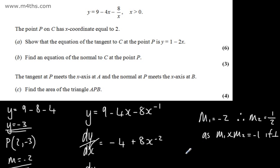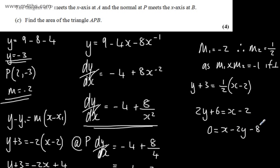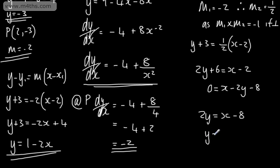Using point P (2, -3), the normal equation is y plus 3 equals one half times (x minus 2). Multiplying through by 2 gives 2y plus 6 equals x minus 2, which rearranges to x minus 2y minus 8 equals 0. Alternatively, this can be written as 2y equals x minus 8, or y equals one half x minus 4. Since no particular form is required, either is acceptable.